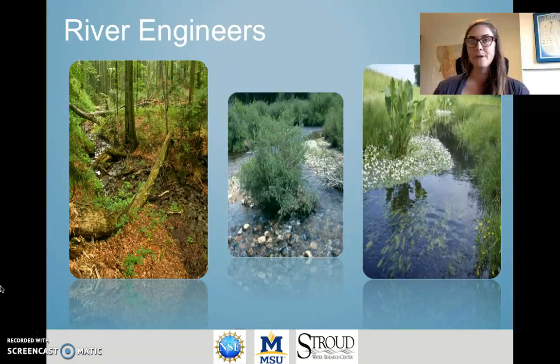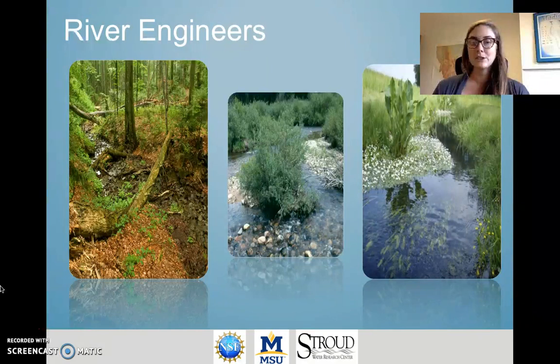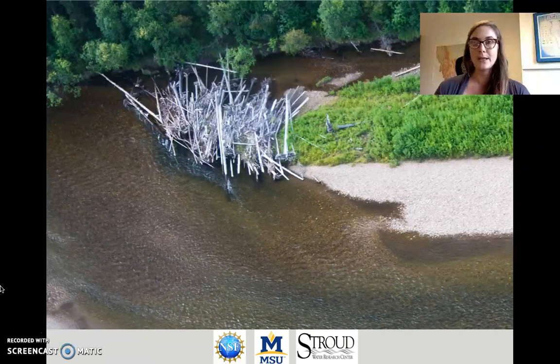Rivers also have important ecosystem engineers. Vegetation is one of the major engineers in rivers and streams. Woody debris falling into a stream can alter water flow and sediment erosion. Vegetation growing in the river channel itself can stabilize the river bed and river banks. Vegetation growing in the water can slow down flow and create ponded or pooled areas. When woody debris piles up, it can alter not only water flow but also the accumulation of sediment and the formation of islands in large rivers.